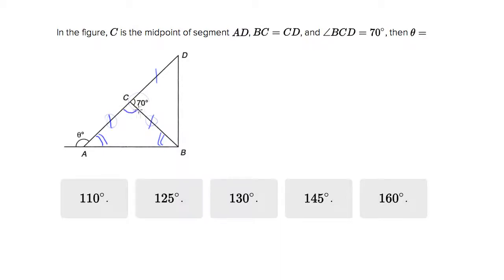You can also figure out this angle up here because two angles across a line must sum to be 180. If we call that angle X, X plus 70 must equal 180, so X must be equal to 110.